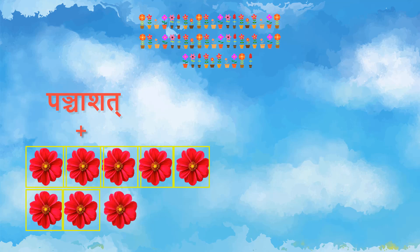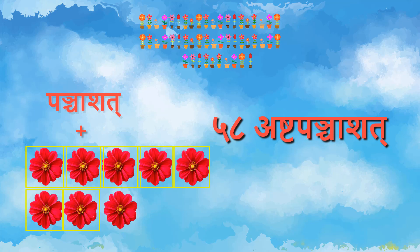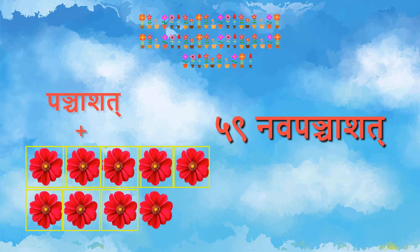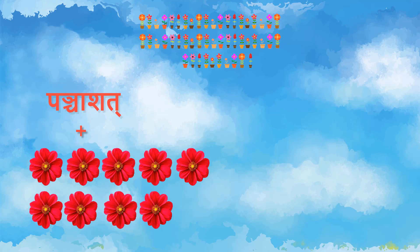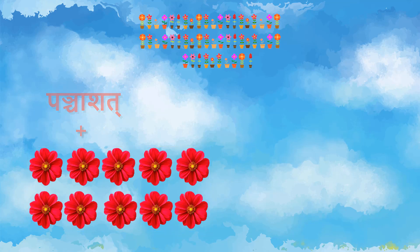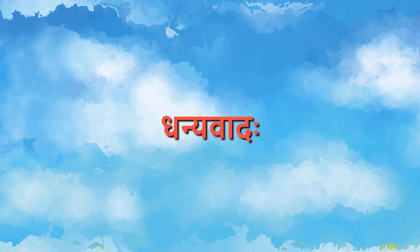षड्, सप्त, अष्ट — So how many flowers are there? अष्ट पंचाशत Fifty-eight. यहाँ पे जोड़ेंगे एकम, द्वे, त्रीनी, चत्वारी, पंच, षड्, सप्त, अष्ट, नव — नव पंचाशत Fifty-nine. अब हम जोड़ेंगे दश flowers — पंचाशत में नव जोड़े तो हुआ नव पंचाशत, और दश पुष्प जोड़े तो षष्टि — 60. I hope you all have enjoyed learning numbers. Happy learning. धन्यवाद।